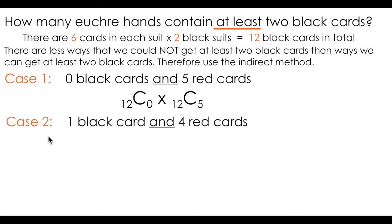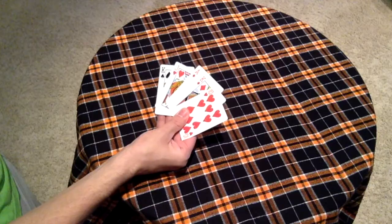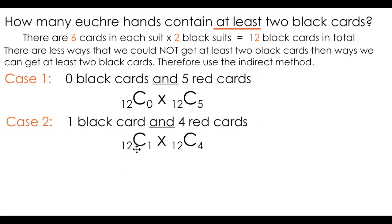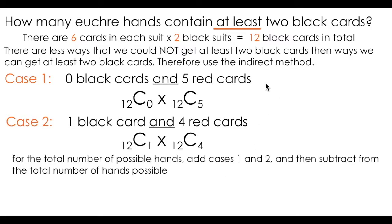Looking at the second case where I have one black card and four red cards, we can use similar logic to say 12 choose 1 times 12 choose 4. We'll model this case because I have two cases where I have at least two black cards. I can add these two together just like the last example, but remember I'm subtracting them from the total number of hands possible, 24 possible cards, and I'm choosing five. This should provide me with the number of euchre hands that contain at least two black cards.